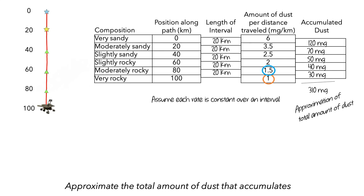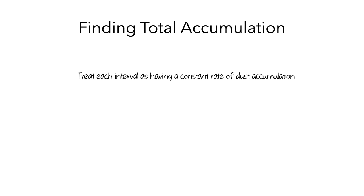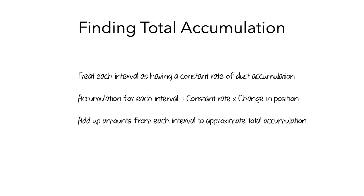Using the rate at the end of each interval would give a slightly different approximation of the total amount of dust, and it wouldn't necessarily be more or less accurate than the one using rates from the beginning. To summarize the general method: to estimate the total amount of a quantity that has accumulated, we treat each interval as having a constant rate. We can use the rate at the beginning or end of each interval, multiply that constant rate by the change in position to find the accumulation over each interval, and then add up all the intervals to get an approximation of the total amount of dust accumulated.